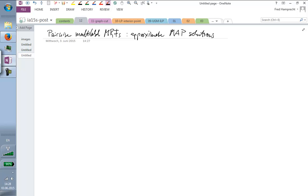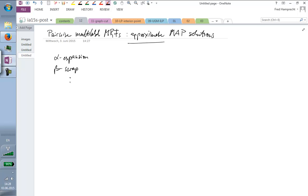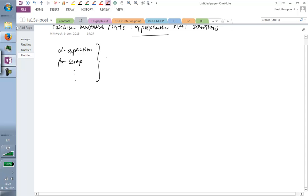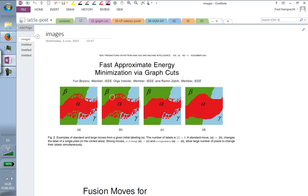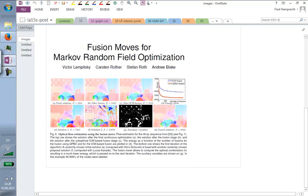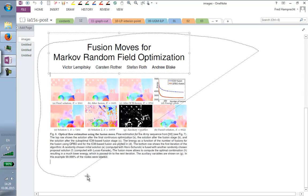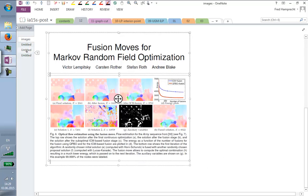So, we're looking at pairwise multi-label MRFs, no matter whether submodular or not. And we're now looking at approximate map solutions. And I am now... So, there are a couple of algorithms that fall into this class. Very famous ones are so-called alpha expansion or beta swap.